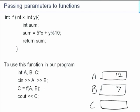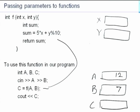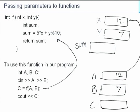When I invoke f(a, b) as part of an expression, control goes over to the function. When this function was compiled, locations for x and y were set up, along with a location for sum. x and y are formal parameters which receive values, and sum is a local internal variable. When the function is invoked, the values of a and b are copied: x becomes 12 and y becomes 7. The value is actually copied — that is our understanding.